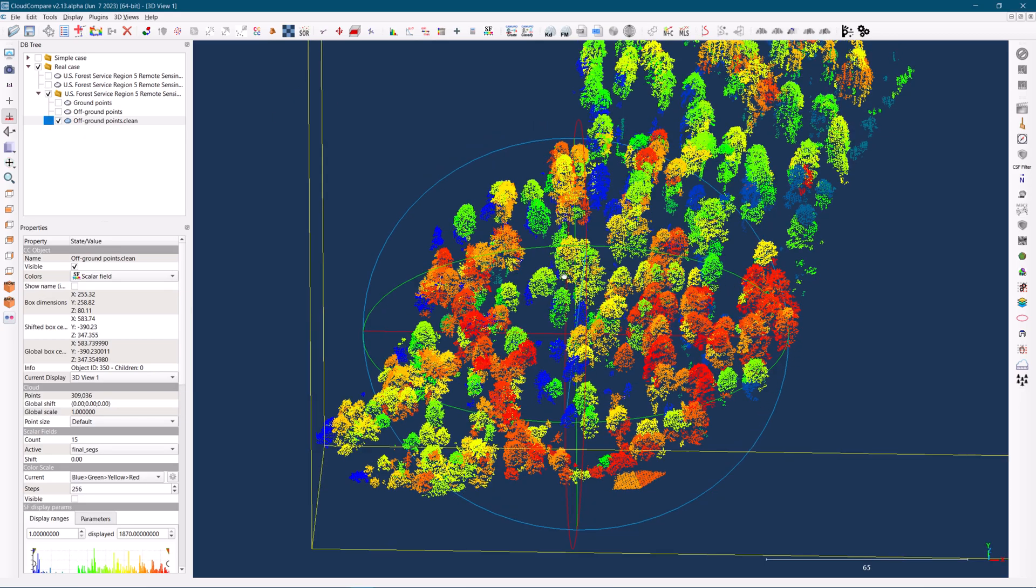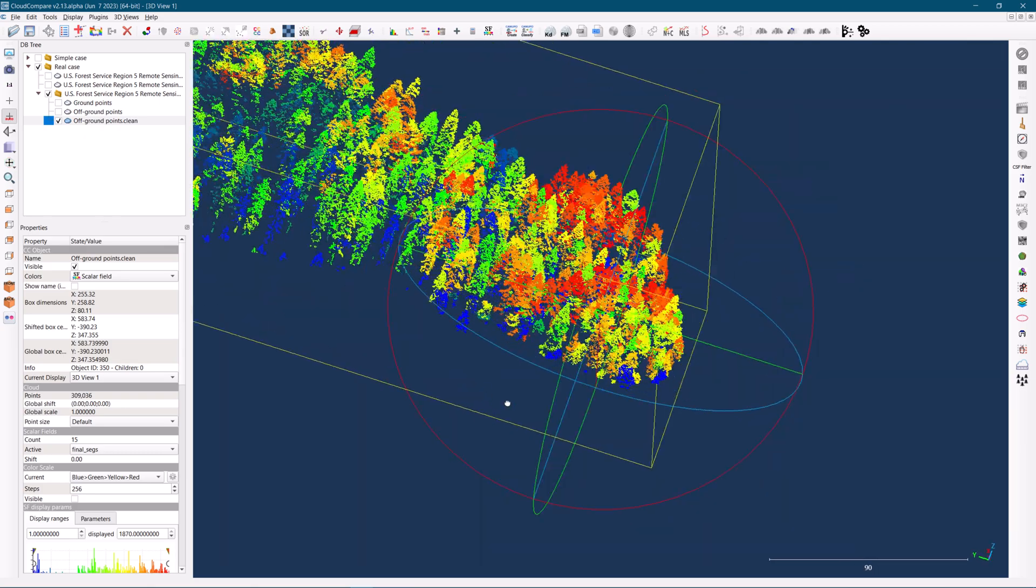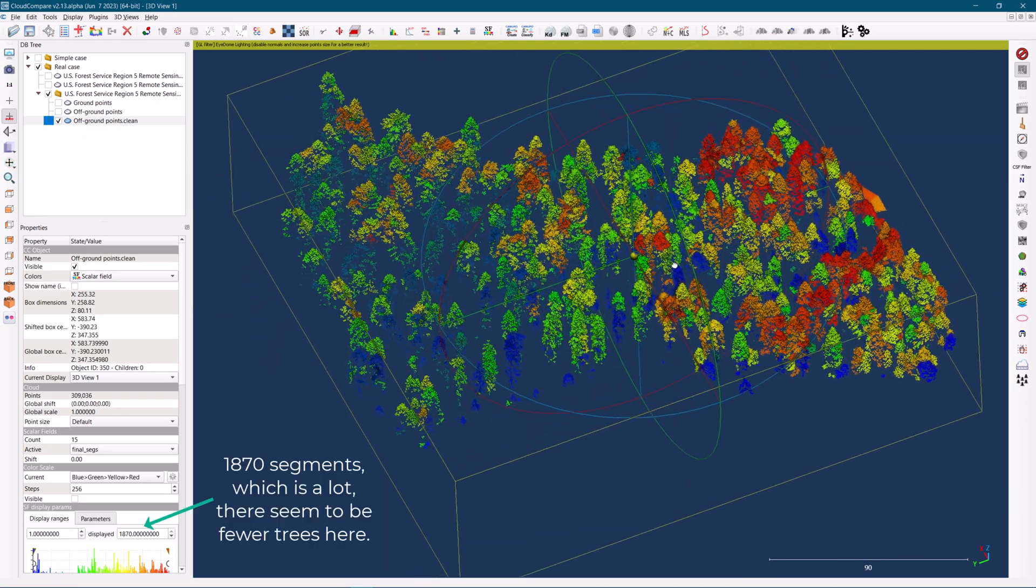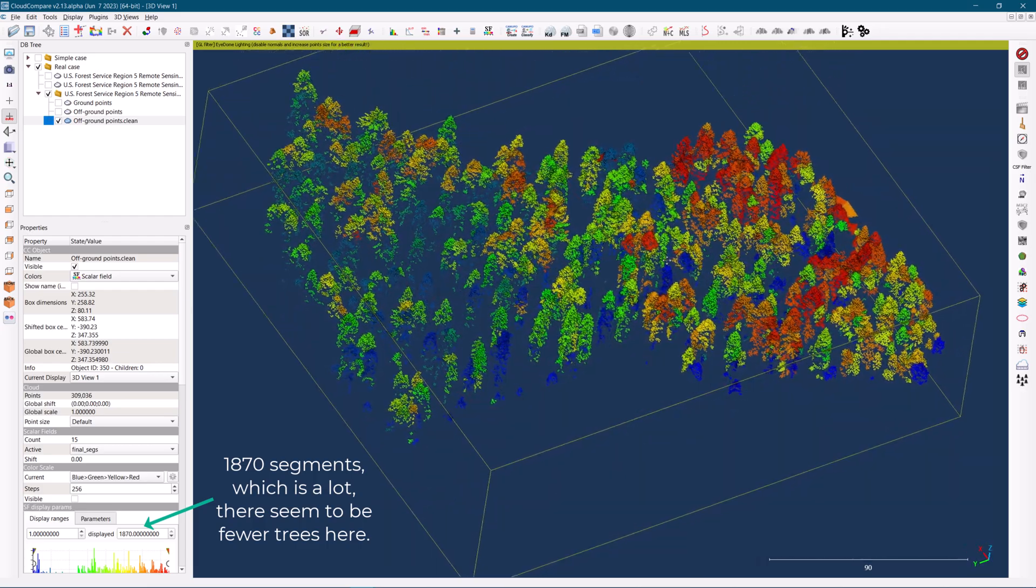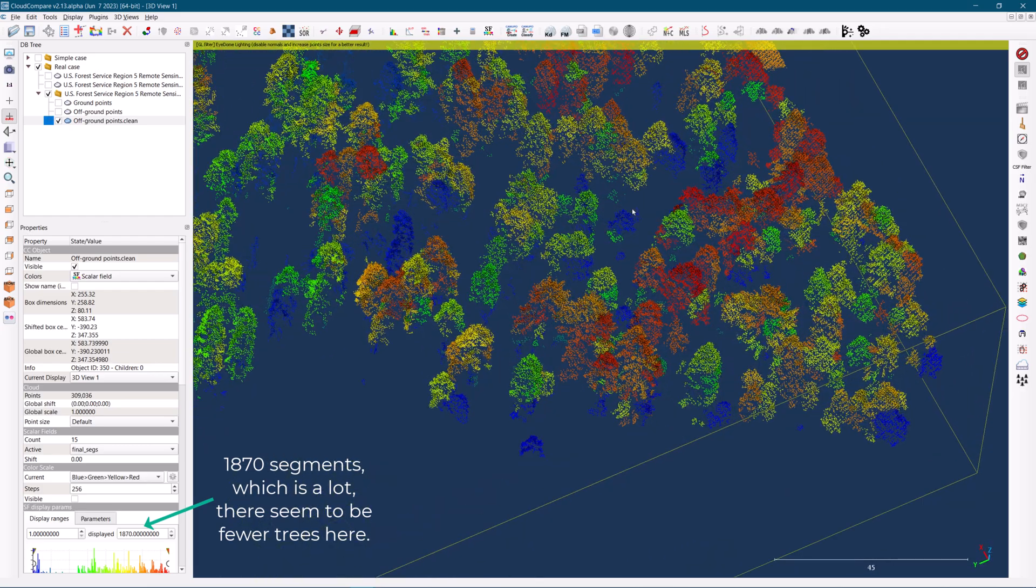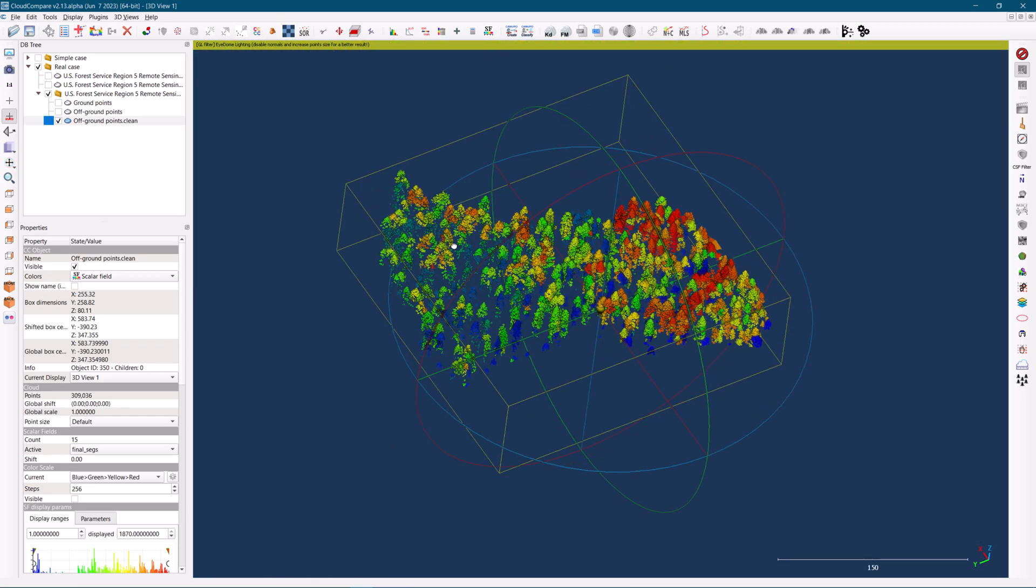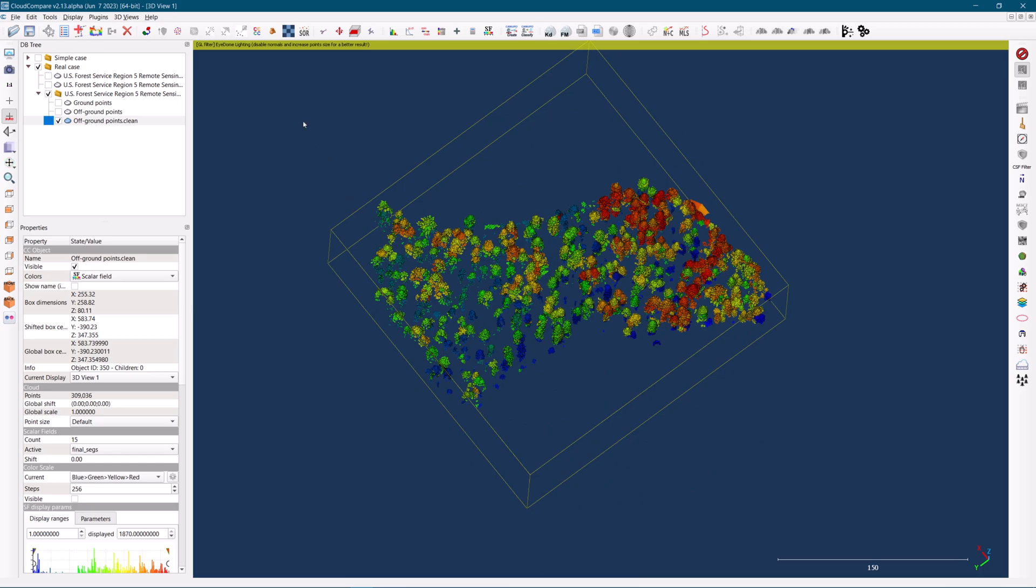And there we have it. Here are the results of the tree isolation process. It's important to note that they may not be perfect initially, but with some parameter adjustments, we can fine-tune the results to achieve the most suitable outcome based on our specific requirements.